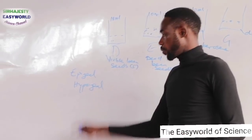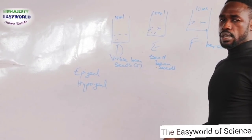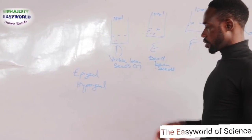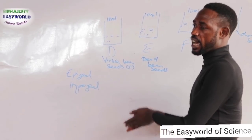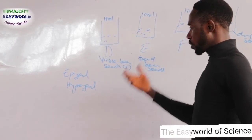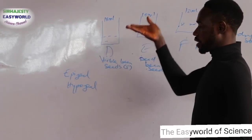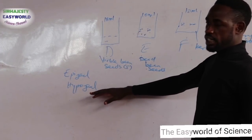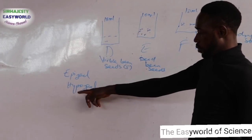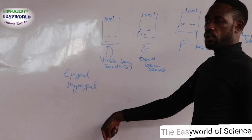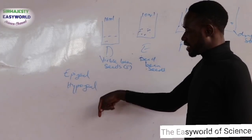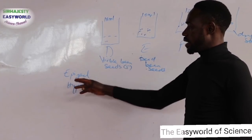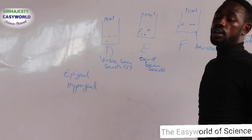When we say epigeal germination, it is a type of germination whereby the cotyledons are carried above the soil level. While hypogeal, the cotyledons are carried below the soil level. The germination keeps the seed inside the soil in hypogeal, while epigeal keeps the seed above the soil.